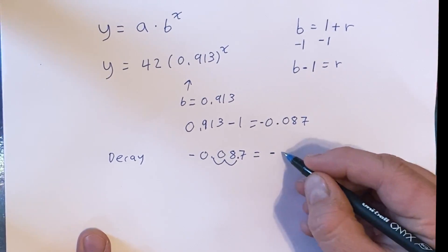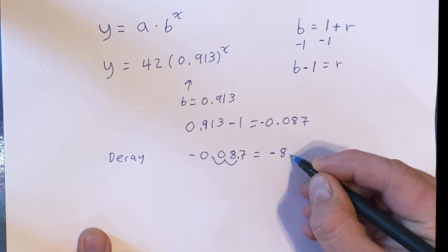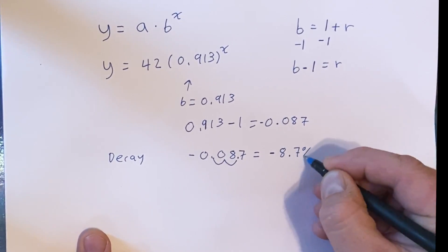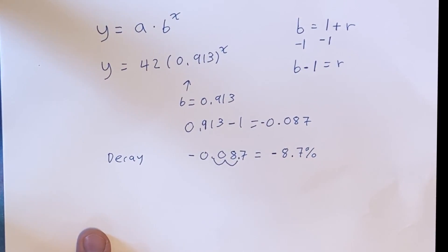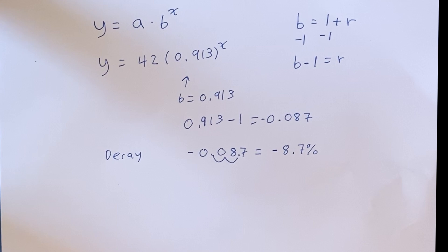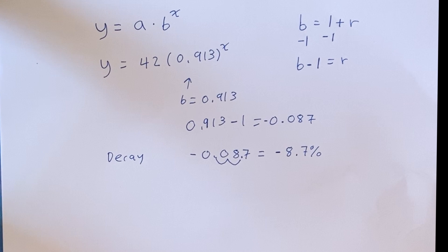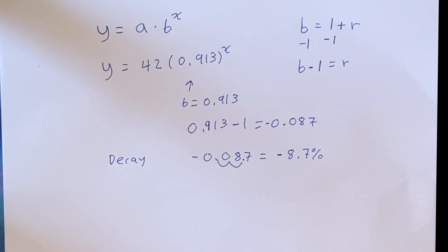So our growth slash decay, in this case decay rate, is negative 8.7%. So we would write that in DeltaMath as negative 8.7. And then when we hit submit answer, we should get a big, happy, green check mark if we did it right.